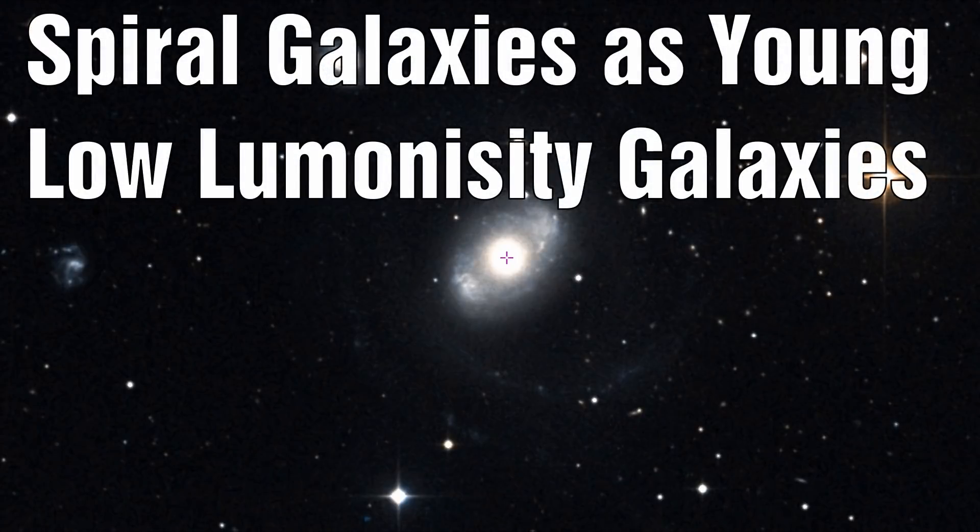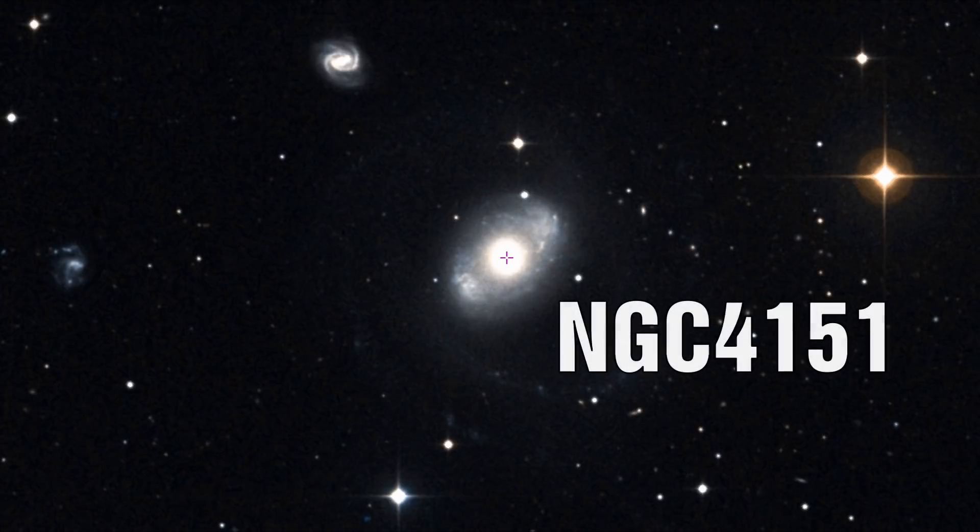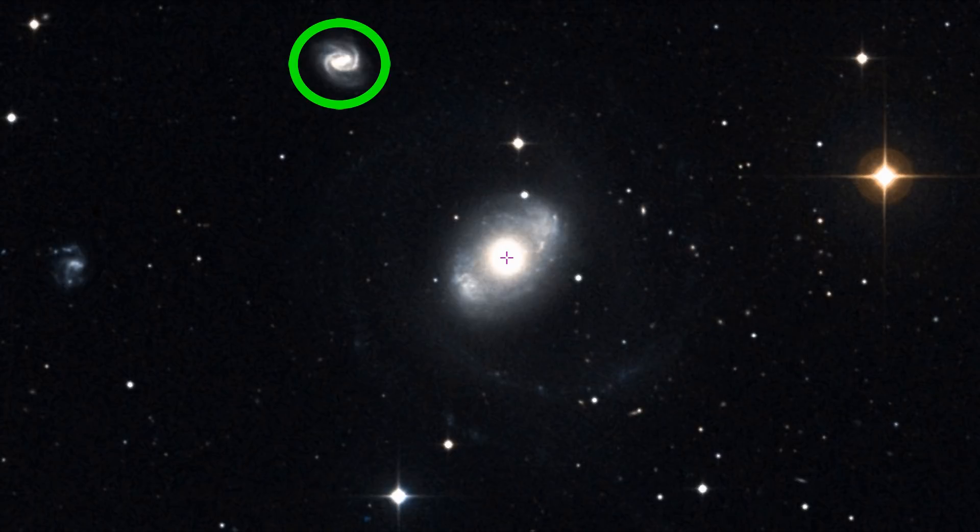Spiral galaxies as young low luminous galaxies. The companion galaxy northeast of NGC 4151 has sharply defined spiral arms. This type of galaxy is normally defined as a high luminous galaxy due to their higher redshift. Which are taken as an indication of distance and thus higher luminosity. Since it is attached to the low redshift NGC 4151 it must have an intrinsic redshift and a low luminosity.